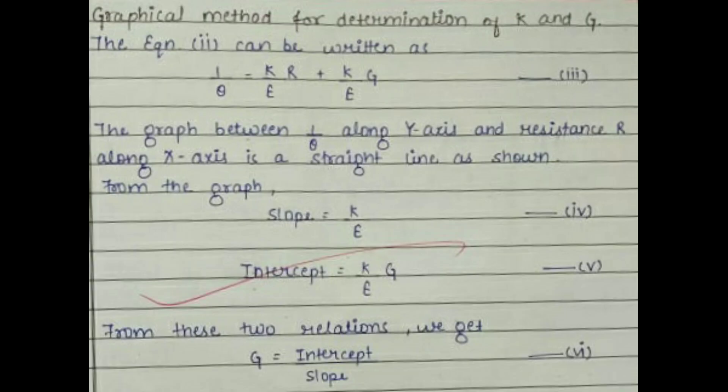This image shows the graphical method for determination of K and G and the equations you can see are being used. So the final equation is also being used: G is equal to intercept upon slope. The next image that you are going to see is about the graph, so watch the image carefully.